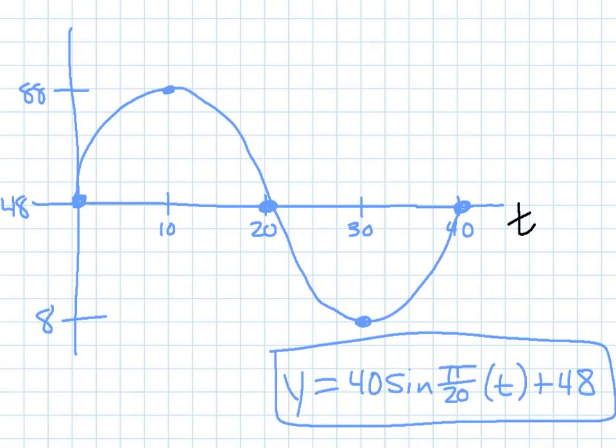So, as I sketch my graph, I go up first. So at 10 seconds, I'm at 88 feet. 20 seconds, I'm back to the middle. So back even with the wheel's axle. At 30 seconds, I'm at the bottom of the Ferris wheel, at 8 feet. And then, at 40 seconds, I'm back to where I started.